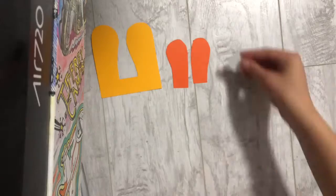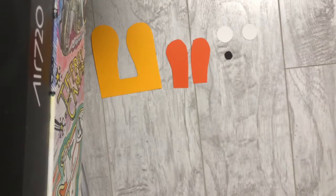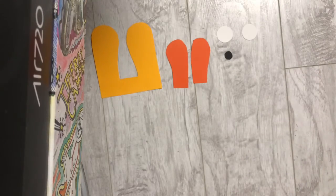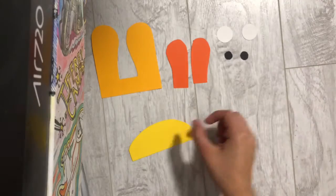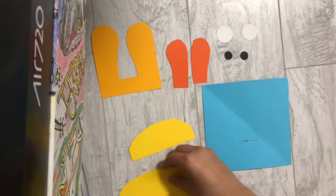Our first step is going to be cutting out a couple of shapes such as the ears, the eyes, the nose, the tongue, and the actual face of the dog.